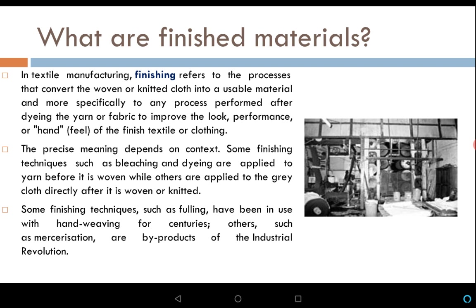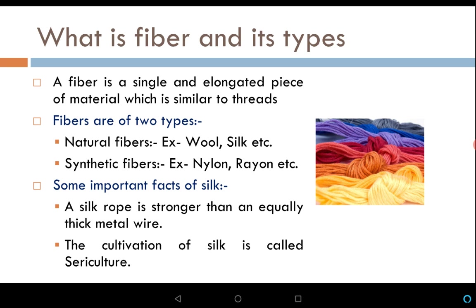Now let us talk about what fibers are and the types of fibers. A fiber is a single, elongated piece of material which is similar to threads but not exactly threads. Fibers are of two types: the first being natural fibers — such as wool, silk, cotton, and jute — and the second being artificial or synthetic fibers.